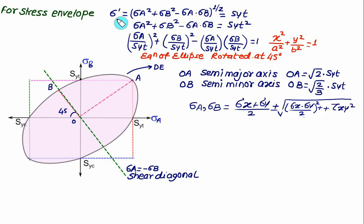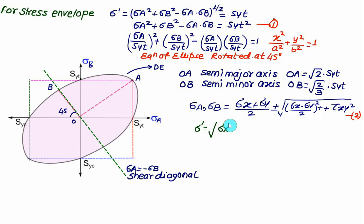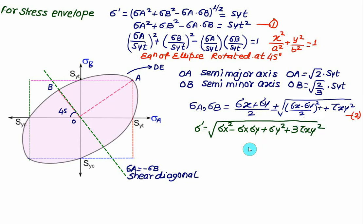Setting sigma prime² = Syt² and substituting sigma_a and sigma_b in terms of sigma_x, sigma_y, and tau_xy, we obtain another useful expression: sigma prime = sqrt(sigma_x² - sigma_x·sigma_y + sigma_y² + 3·tau_xy²). This form is convenient when the given data is in terms of sigma_x, sigma_y, and tau_xy rather than principal stresses.